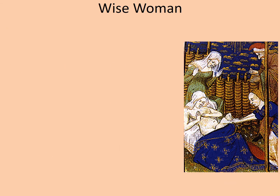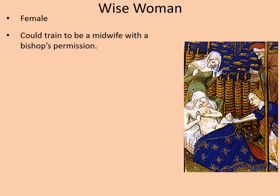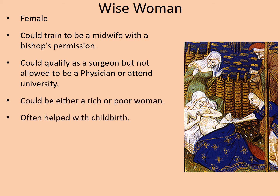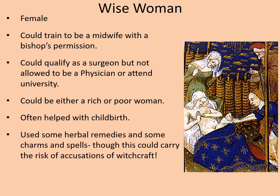The wise woman — as the name suggests, these were female. They could train to be a midwife, but needed the bishop's permission first. They could qualify as a surgeon, but were not allowed to be a physician or attend university. They could be either rich or poor women. They often helped with childbirth, and used herbal remedies and some charms and spells, although this could carry risks of accusations of witchcraft, so women had to be careful. Wise women were cheap and accessible — every village had one. You could imagine the household saying, 'Such and such is sick — don't worry, the wise woman down the street has a remedy for that.'